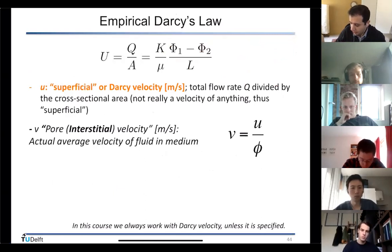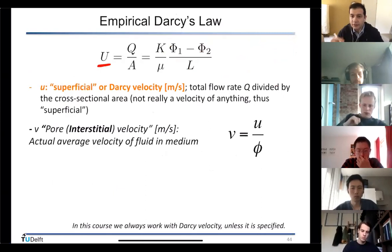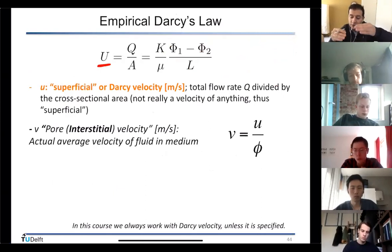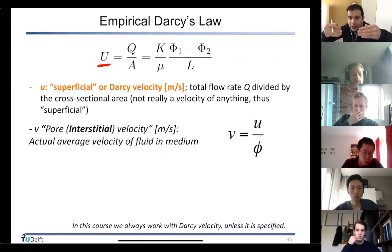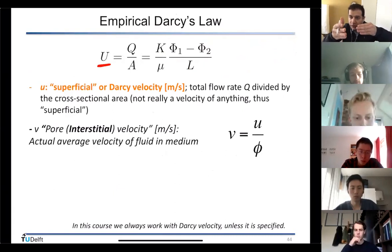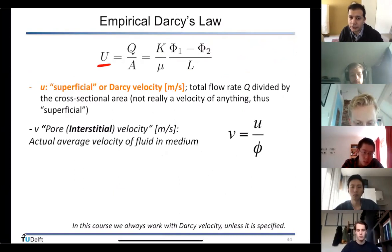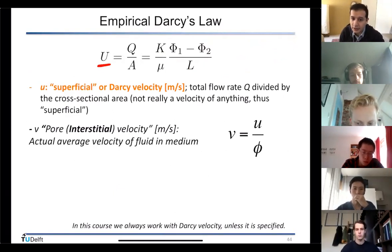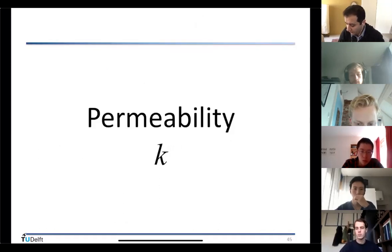Darcy velocity is an average velocity. Flow inside the pores is actually faster because some parts are blocked by grains, so water flows faster locally. But when you define the average based on the entire cross-sectional area of the porous material, you get Darcy velocity — a superficial velocity, not really the velocity of any individual fluid parcel.